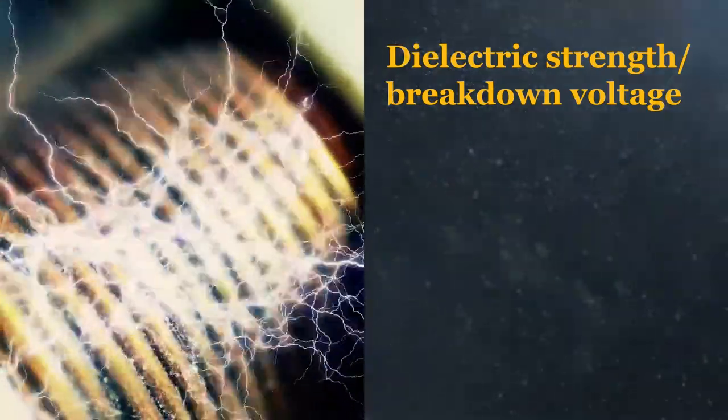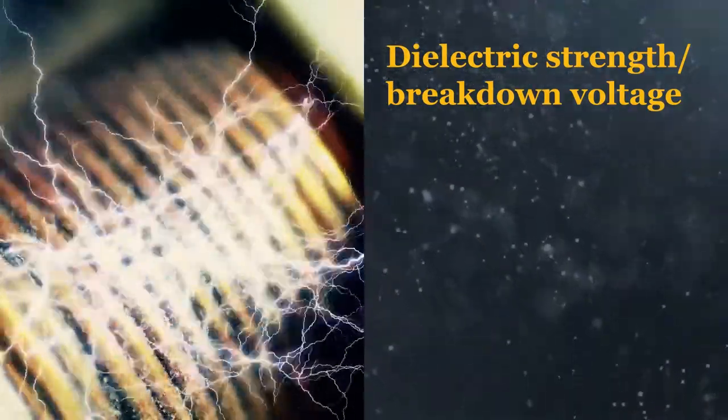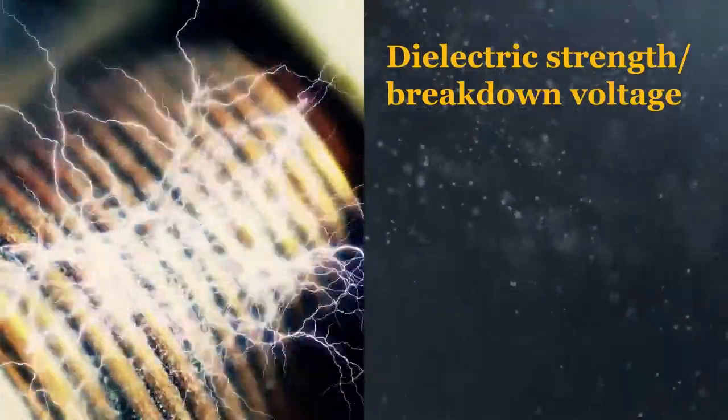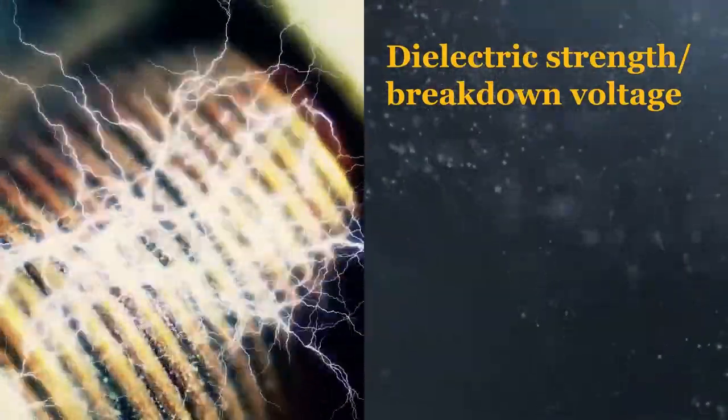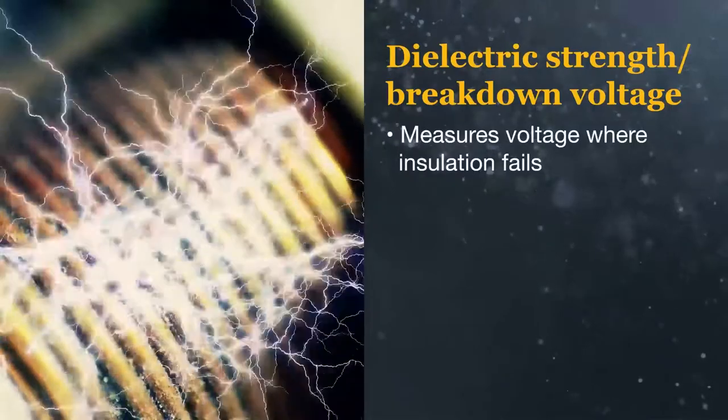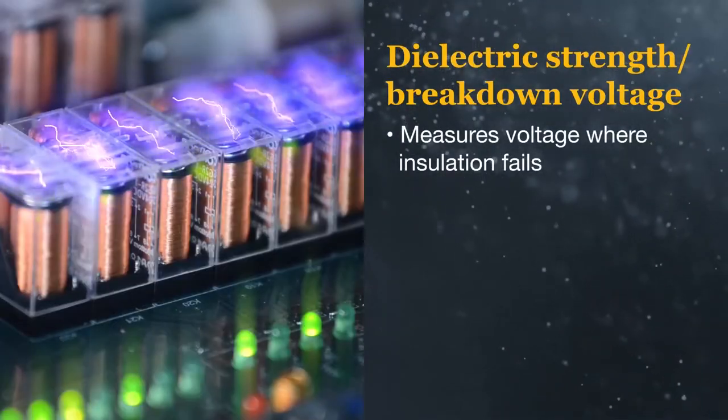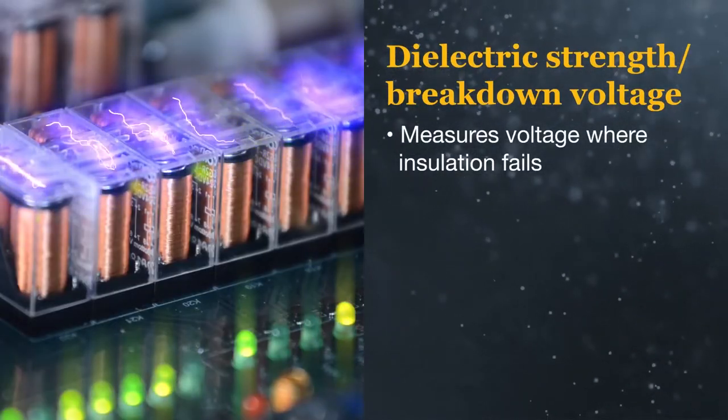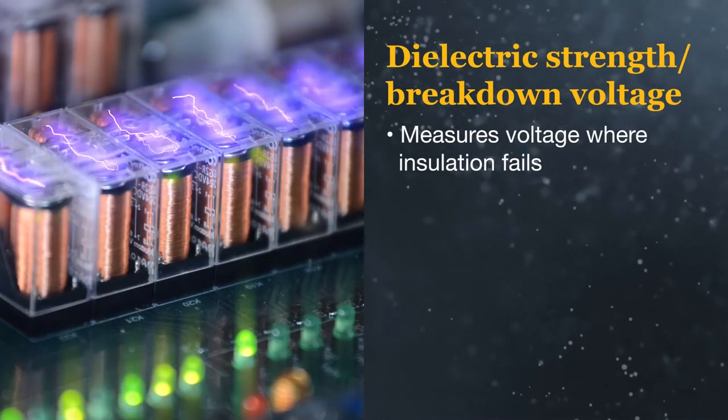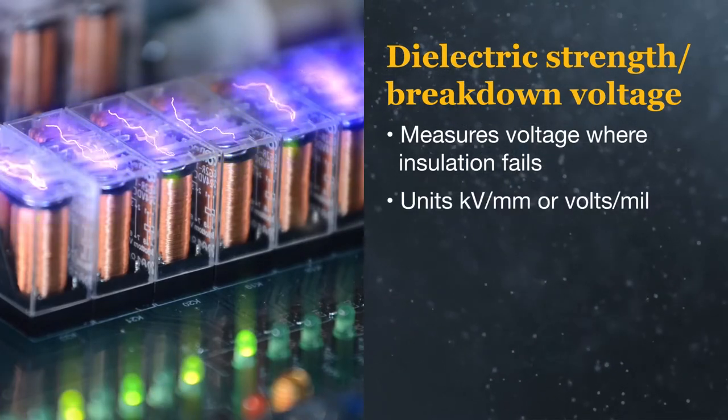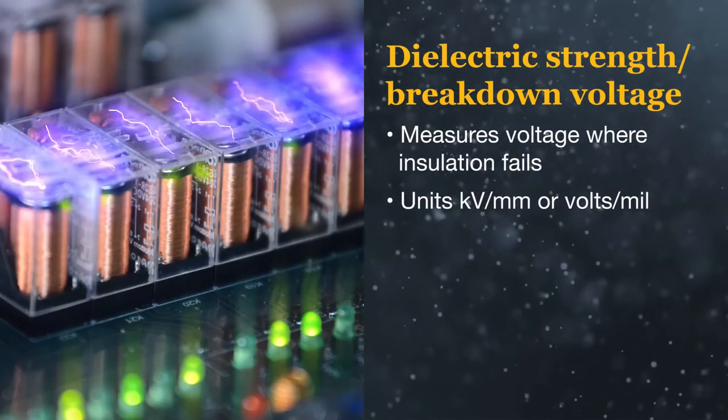Dielectric strength is another very important and related property to resistivity, sometimes shortened to DS. This measures voltage where insulation fails and electricity flows through the material, also known as arcing. This property is also called dielectric breakdown voltage.